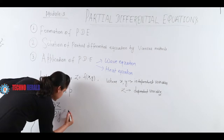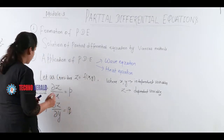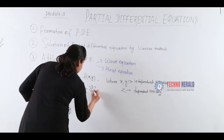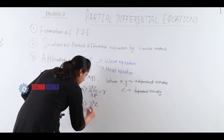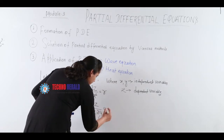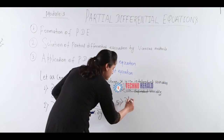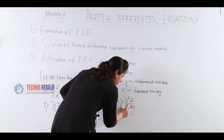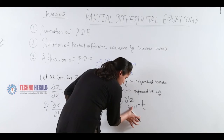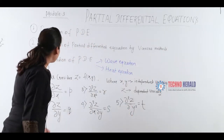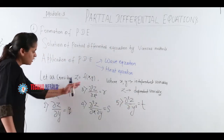Third, dou squared Z by dou X squared is denoted by R. Fourth, dou squared Z by dou X dou Y is denoted by S. And the fifth and last is dou squared Z by dou Y squared, which is denoted by T. So throughout this chapter, we will be using these notations P, Q, R, S, T invariably in place of the respective partial derivative expressions.